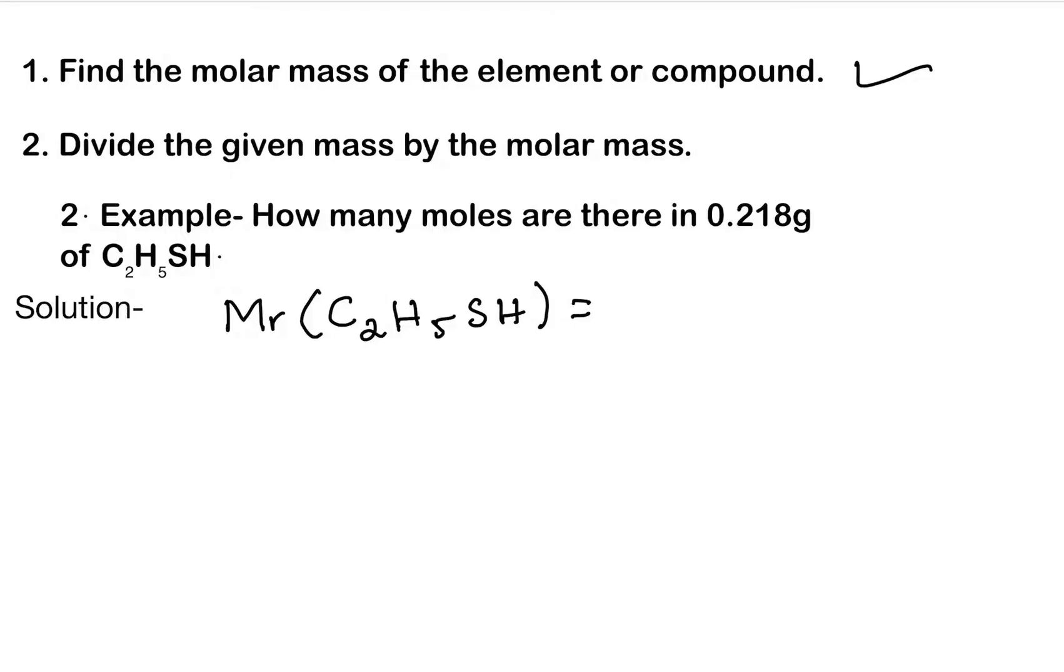So molar mass—we can write down MR, short form of molar mass—of C2H5SH equals: carbon is 12, so 12 times 2, plus hydrogen is 1, so 1 times 5, plus sulfur is 32, plus 1. So it will be equal to 62 gram per mole. So this is the molar mass.